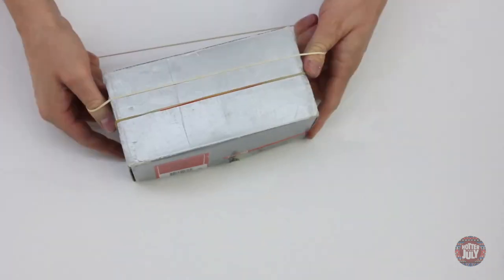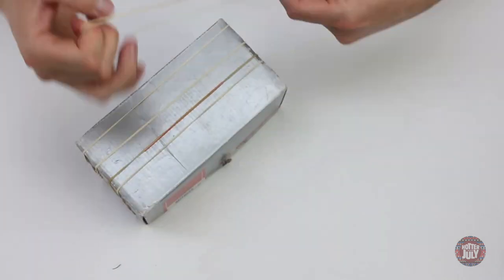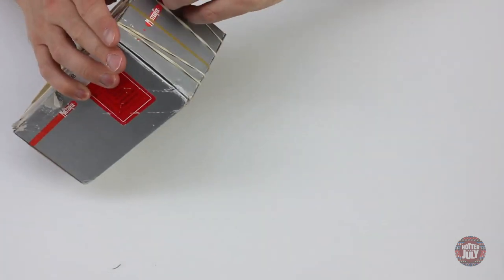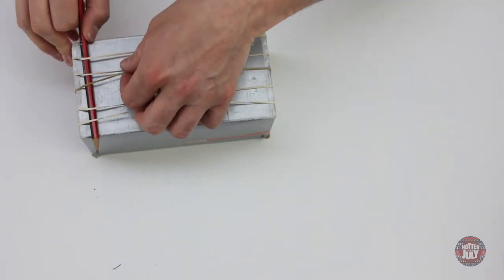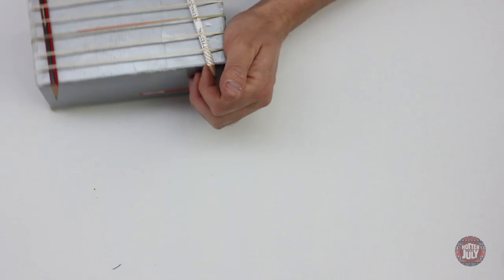Firstly, wrap the rubber bands around the box. You'll notice that they won't freely vibrate as they are sitting flat to the surface of the box. Put the pencils under the rubber bands and secure at each end of the box to allow the string room to vibrate.